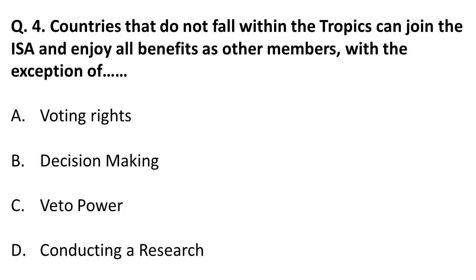What about countries that do not fall within the tropics? Countries outside the tropics can also join and enjoy all the benefits as other members, with one exception — they cannot vote in decision-making. So countries from outside the tropical region do not have voting rights. They can join, but they will not have voting rights.